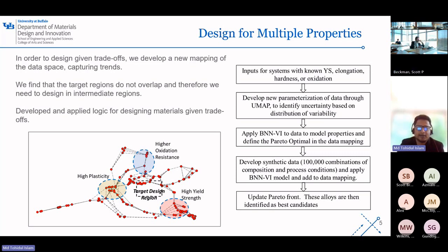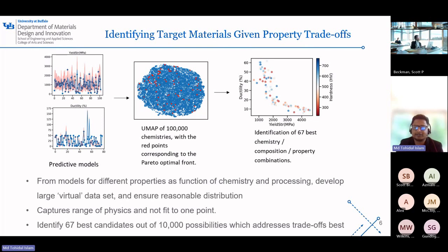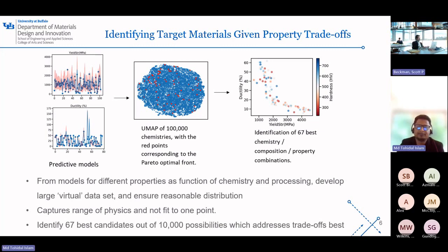Imagine we have 100,000 different possible materials. We fit them back into our model, and this updates our Pareto front that highlights the best candidates. We used predictive models for different properties such as strength and ductility, creating a massive virtual dataset. The UMAP here is like a treasure map with 100,000 points, each representing a unique material chemistry. The red dots are the optimized compositions that show us the best trade-off between the properties. Out of 100,000, we have pinpointed 67 points for further investigation.